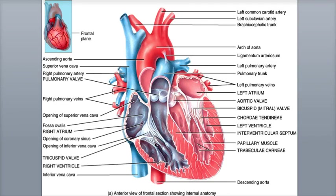The chordae tendineae are tough, tendon-like cords of connective tissue that are attached to the cusps of the tricuspid valve. The chordae are also connected to papillary muscles, which are cone-shaped trabeculae carnii that project from the ventricular wall. In between the right and left ventricles is a partition called the interventricular septum.